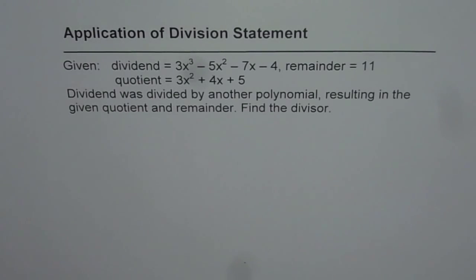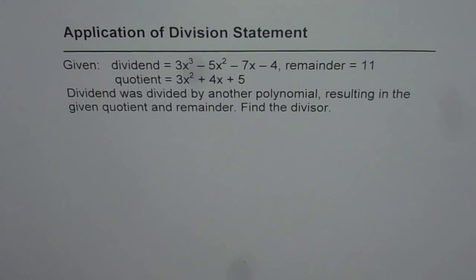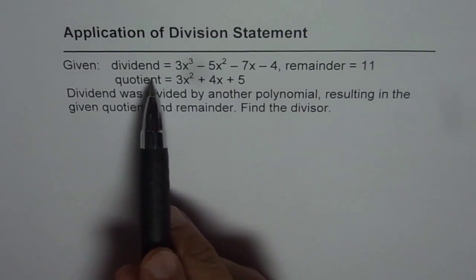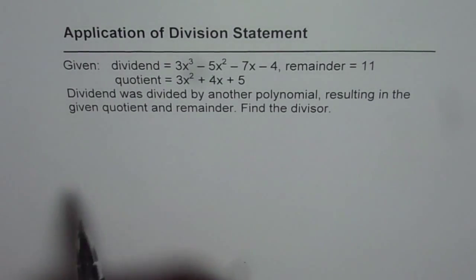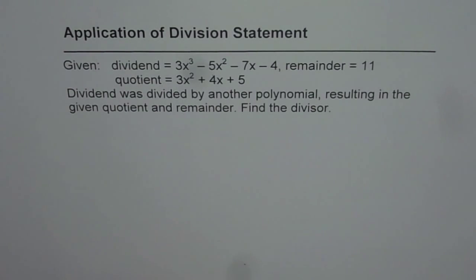Here is an application of division statement. You are given dividend equals 3x cube minus 5x square minus 7x minus 4, remainder is equal to 11, quotient is 3x square plus 4x plus 5.